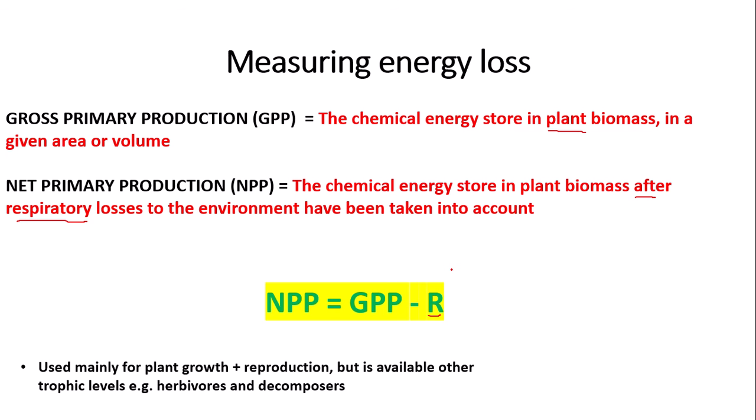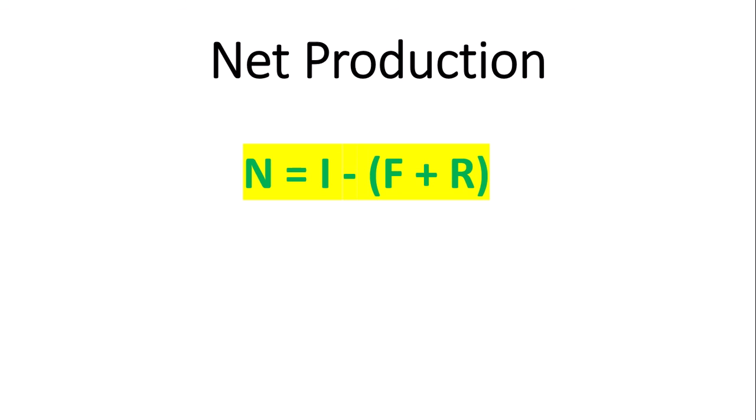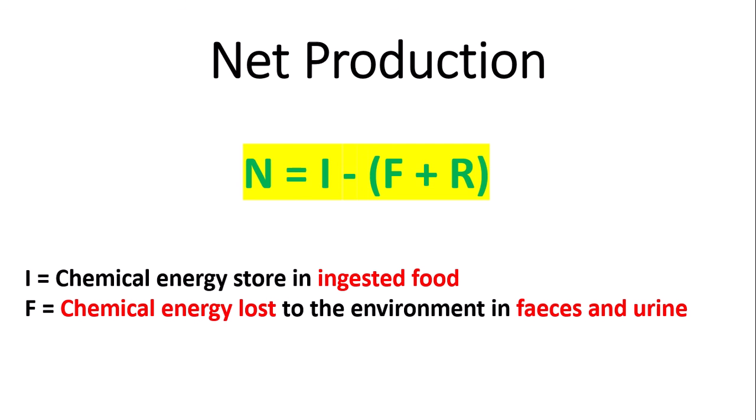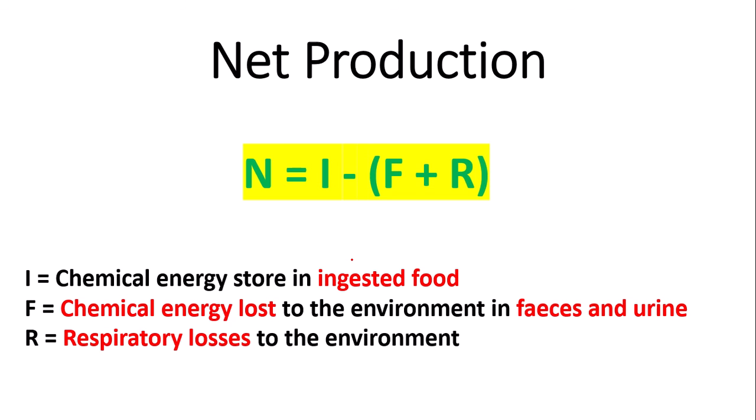NPP is also applicable to other trophic levels, for example herbivores and decomposers, as they mainly obtain their energy through the producers themselves. For consumers higher up in the trophic levels, we use net production, calculated through the formula: N = I − (F + R). The brackets indicate you calculate F + R before subtracting from I. I means the chemical energy store in ingested food; F means the chemical energy loss to the environment in faeces and urine — F for faeces; and R, the same as in net primary production, represents respiratory losses to the environment.